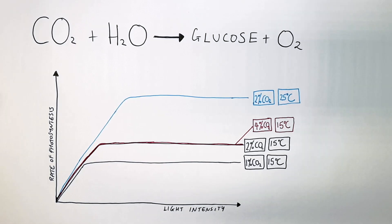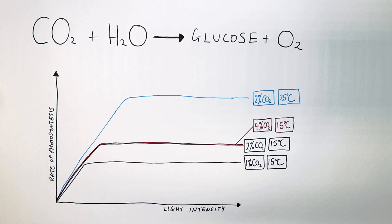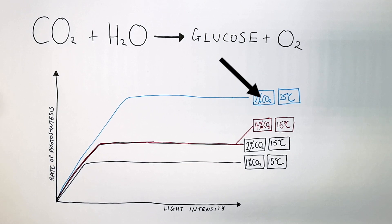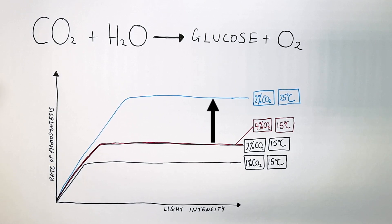Now we've increased the temperature to 25 degrees Celsius but reduced the concentration of CO2 to 2%. As you can see, the rate of photosynthesis has increased.